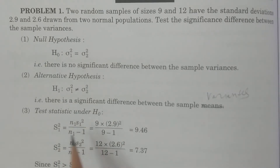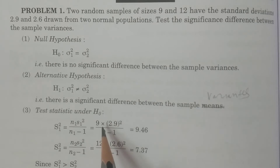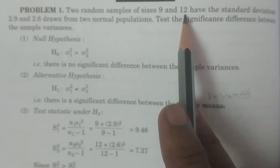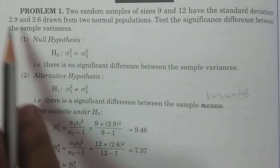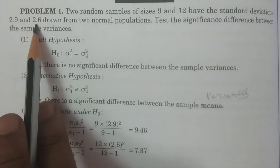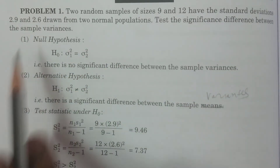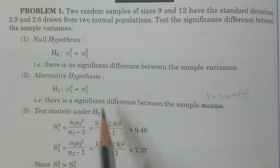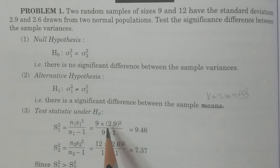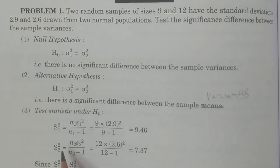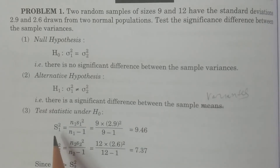Third, the test statistic under H₀. First, write all the given values: N1 = 9, N2 = 12, S1 = 2.9, S2 = 2.6, because these are standard deviations. Therefore, in the test statistic you have to calculate capital S1² and capital S2². See clearly what capital S1² is.